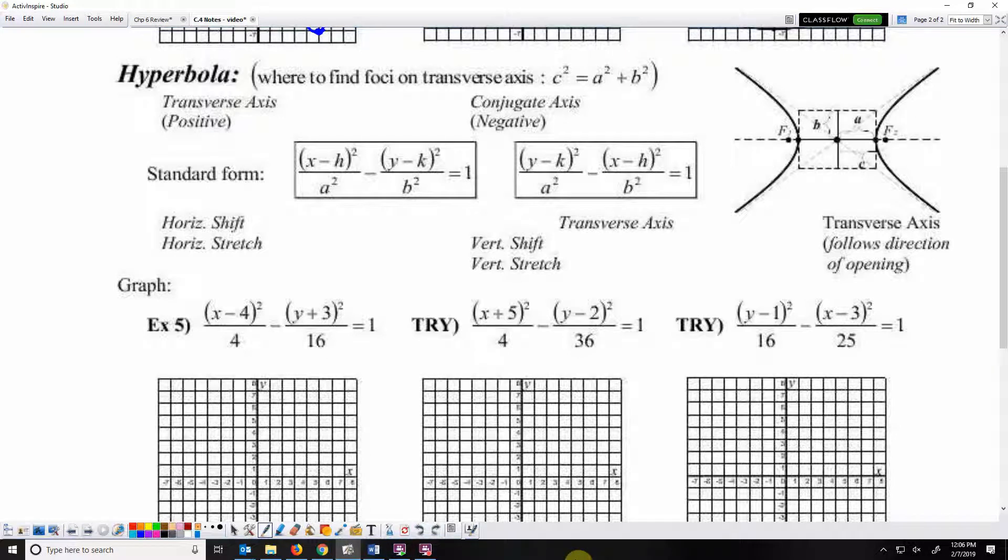To write equations and graph hyperbola, we've got a horizontal shift and a horizontal stretch, a vertical shift and vertical stretch. But notice there's a minus here, whereas in an ellipse that's a plus. And a minus is not commutative, so we actually do need a second version of this.